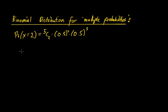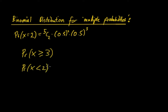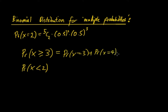Now we're going to look at multiple probabilities — specifically the probability of X being greater than or equal to a number such as three, or less than or equal to two. Instead of just having one specific case, it will cover if you get three heads, four heads, or five heads, for example, if the trials were five. For that, you work out the probability of X equal to three, plus X equal to four, plus X equal to five.